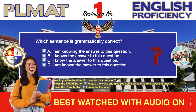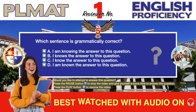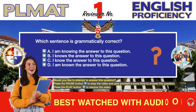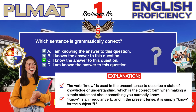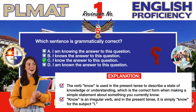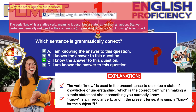Question number five. Which sentence is grammatically correct? A. I am knowing the answer to this question. B. I knows the answer to this question. C. I know the answer to this question. D. I am knowing the answer to this question. The correct answer is C. The verb 'know' is used in the present tense to describe a state of knowledge or understanding, which is the correct form when making a simple statement about something you currently know. 'Know' is an irregular verb, and in the present tense it is simply 'know' for the subject 'I.'